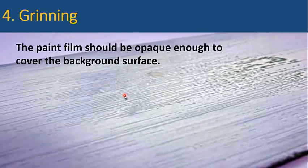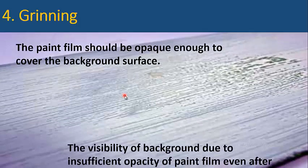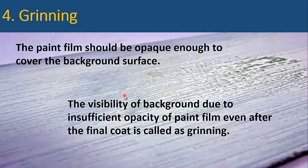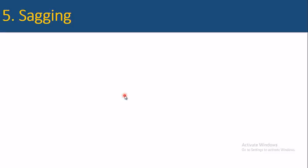The paint film should be opaque enough to cover the background surface. The visibility of the background due to insufficient opacity of the paint film even after the final coat is called grinning.